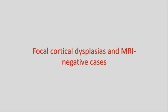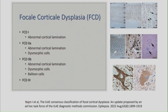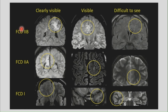Moving on to focal cortical dysplasia and MR-negative cases. In focal cortical dysplasia you have FCD type 1, 2A, and 2B — all with abnormal cortical lamination. FCD 2A additionally has dysmorphic cells, and 2B has dysmorphic cells and balloon cells. Some FCD lesions are clearly visible on MRI, some barely visible, and others very difficult to see. In these cases, multimodal imaging has an important role to play.